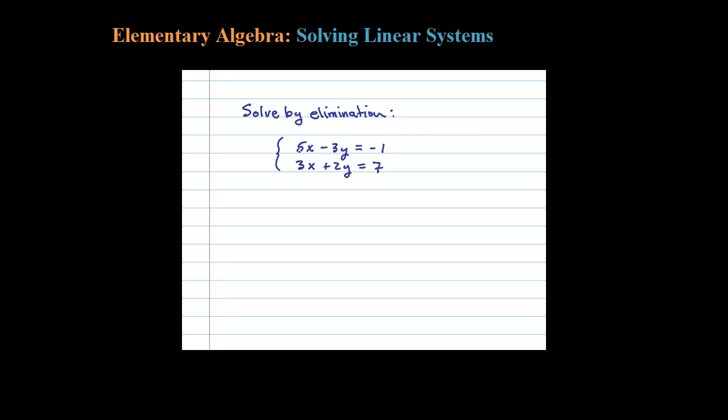Let's see what happens with our equivalent system. Multiplying the top equation by 2, don't forget to distribute, we're left with 10x - 6y = -2. Then multiply both sides of the bottom equation by 3: 9x + 6y = 21.